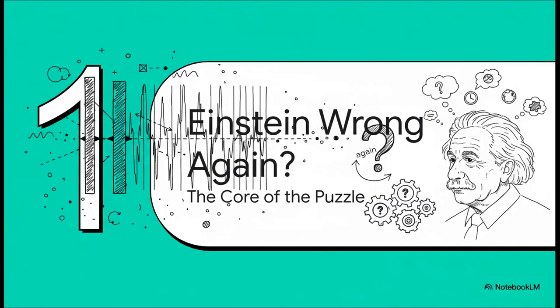Okay, so to really get what all the fuss is about, we got to rewind a bit. We need to go back to one of the weirdest, most famous experiments in all of science, the double slit experiment, and what Einstein himself had to say about its totally bizarre implications.